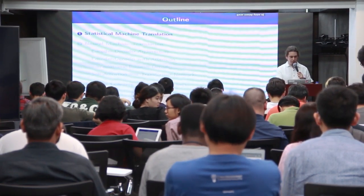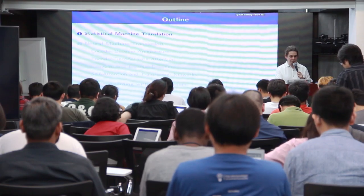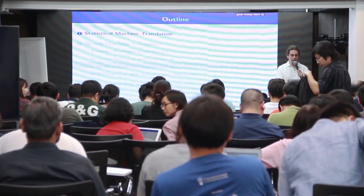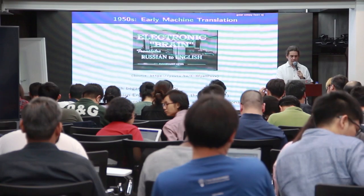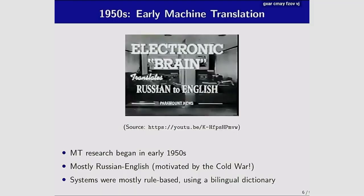Let's start with an overview of statistical machine translation before talking about neural machine translation. Machine translation research began in the early 1950s, coinciding with the Cold War. Initial research focused on Russian to English. Systems at the time were mostly rule-based, using bilingual dictionaries, but there was a lot of optimism.